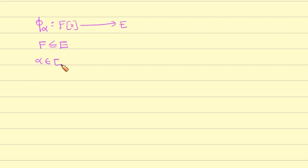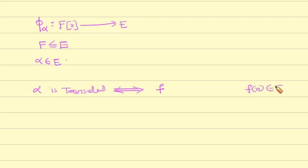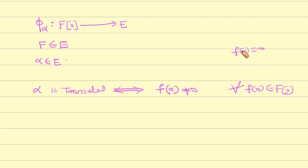By the if and only if definition, consider f[x]. If f(alpha) = 0, then the polynomial equals 0. If f(alpha) is not equal to 0, because the alpha is a transcendental element, the polynomial f[x] with f(alpha) = 0 means the kernel condition holds.